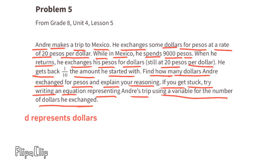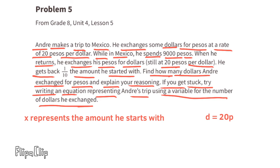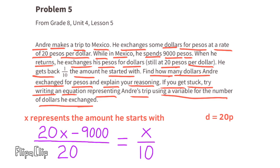We can use the variable d for dollars and the exchange rate: 1 dollar equals 20 pesos. Using x for the dollars Andre started with, I've written an equation: (20x minus 9,000) divided by 20 equals x over 10. The 20x represents the exchange rate, minus 9,000 pesos spent, and dividing by 20 converts back to dollars. The right side, x over 10, represents one-tenth of his original amount.